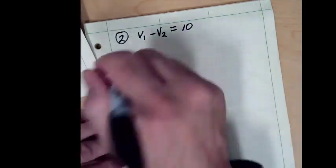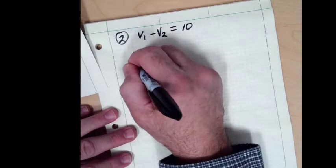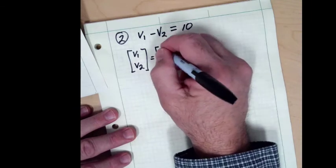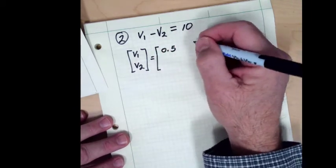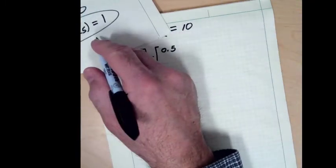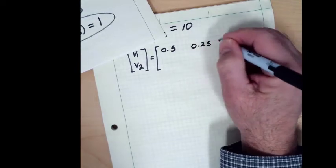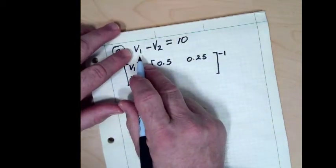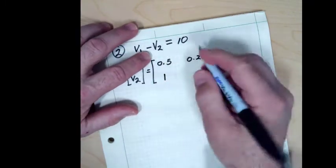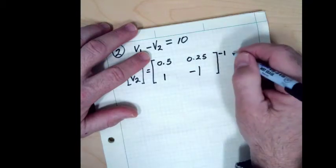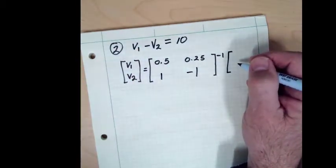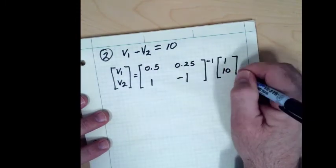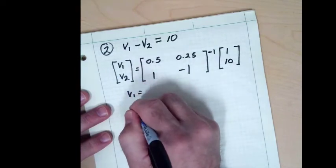Now we have our linear system. The two variables V1 and V2 fit into a 2×2 matrix: the first row is 0.5 and 0.25, the second row is 1 and minus 1. We take the inverse of that matrix and multiply by the constant vector, which is 1 and 10.